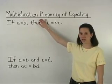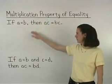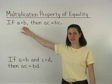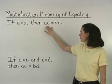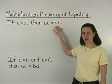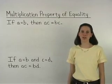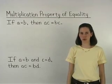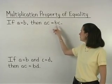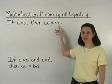The multiplication property of equality states that if A equals B, then A times C equals B times C. In other words, we can always multiply the same quantity times both sides of an equation.